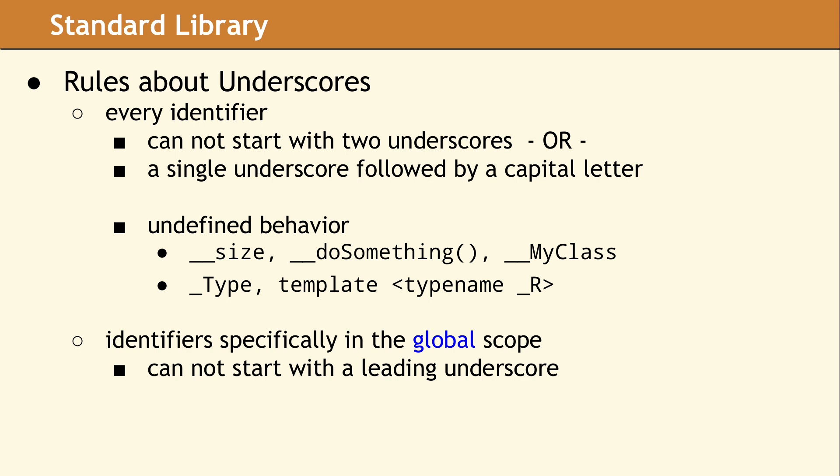For the global scope, there is one additional rule. You cannot declare an identifier whose name starts with an underscore. The rules in the global scope are more strict. As an example, in our template declaration, we are declaring a parameter named underscore R, which is undefined behavior in any scope.